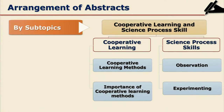Once the abstracts of documents are ready and classified, they can be classified sub-topic wise. The next step is to arrange them with your critical comments about the document. For example, if the researcher's topic is cooperative learning and science process skill, it can be divided into both segments.